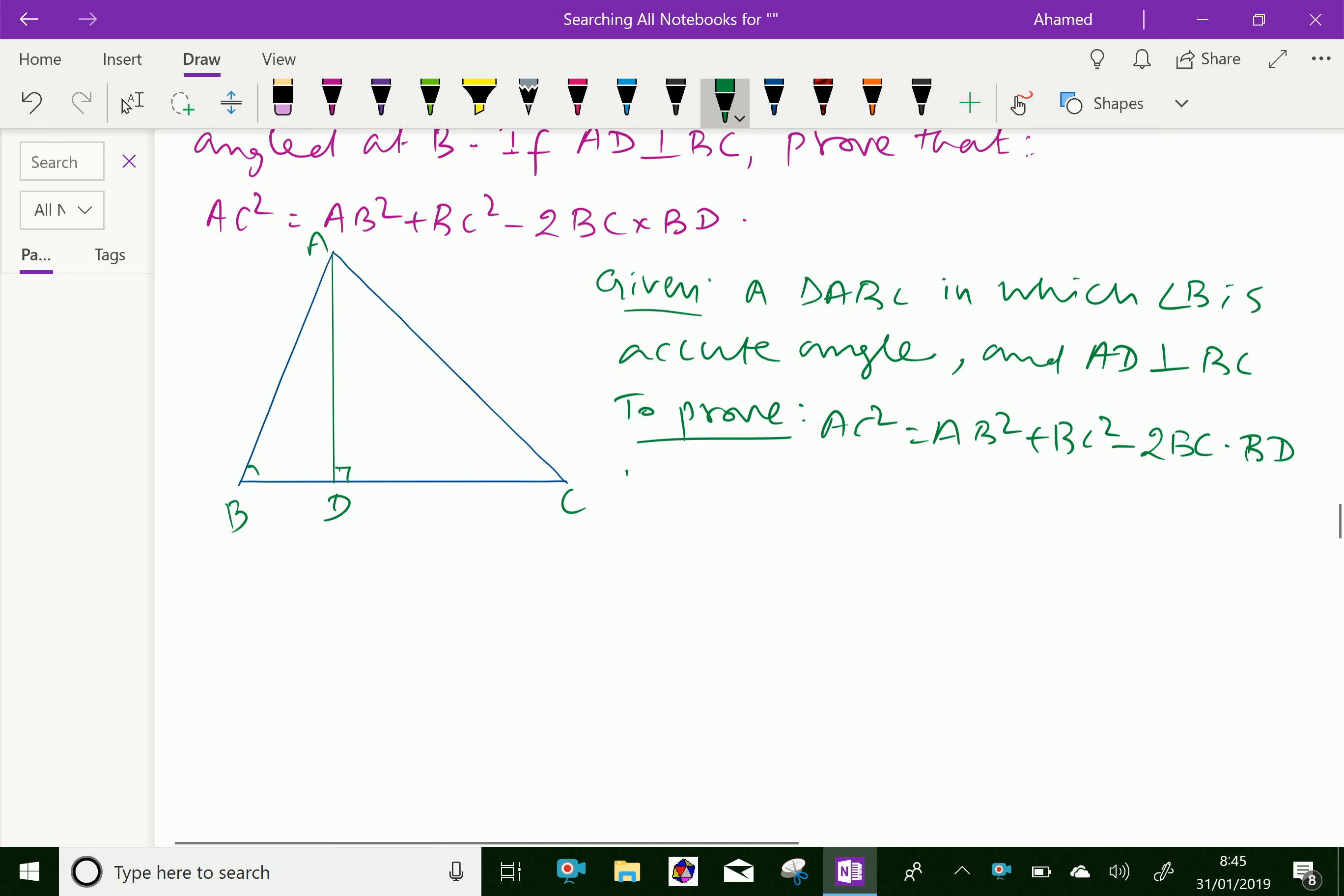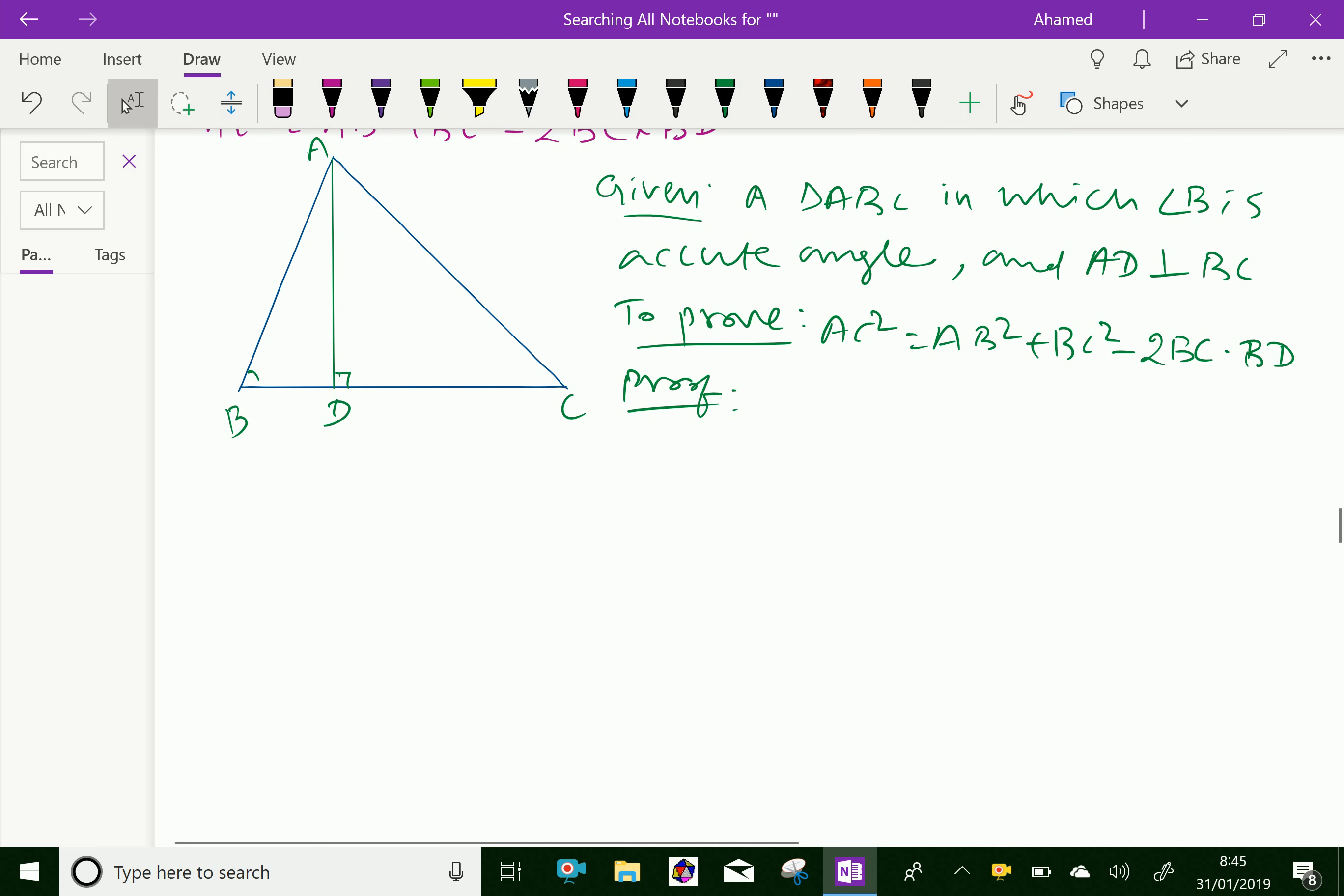Proof: Since the triangle ADB is a right-angled triangle, right-angled at D.